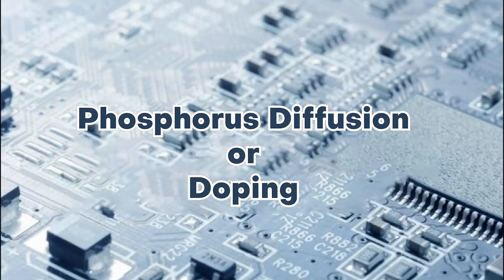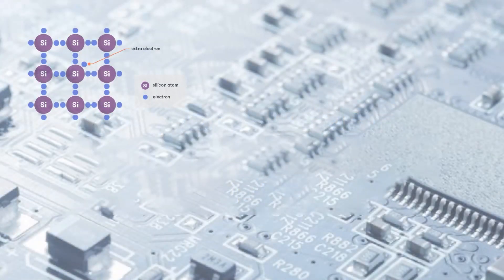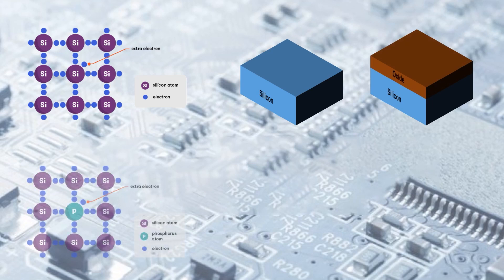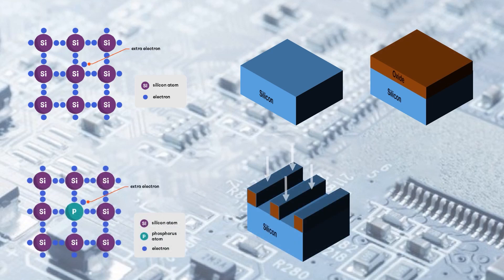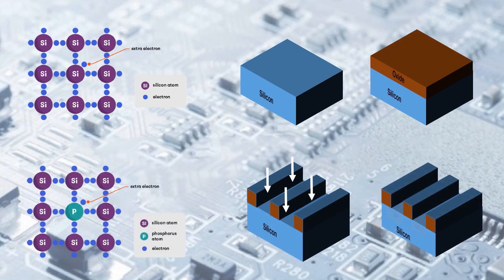In this video we will demonstrate the phosphorus diffusion into the silicon wafer, which is also called doping. Let us first learn about the doping or diffusion process. Doping is meant to provide additional impurity atoms into a semiconductor crystal to modify its conductivity.